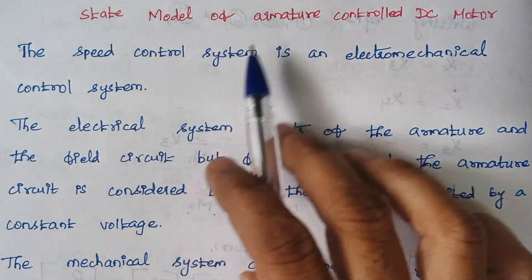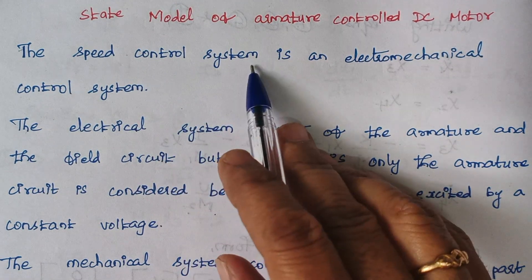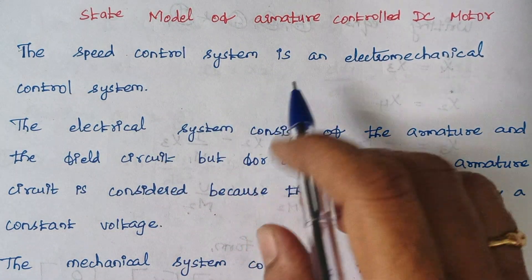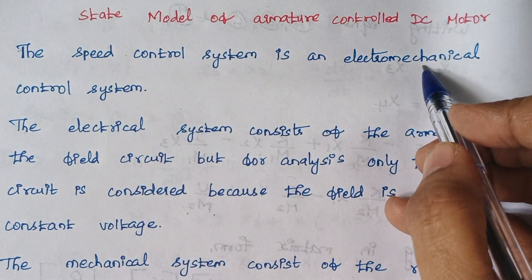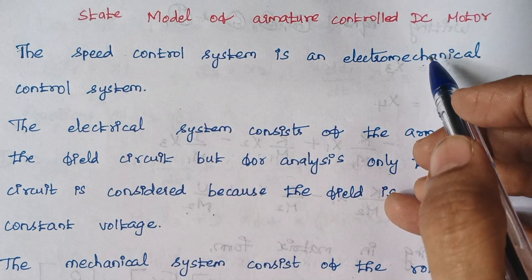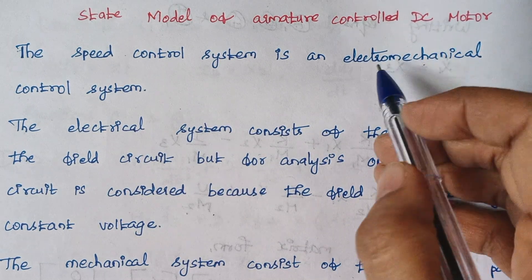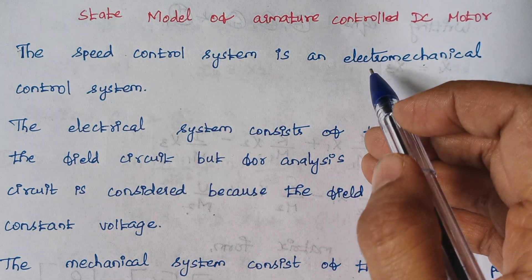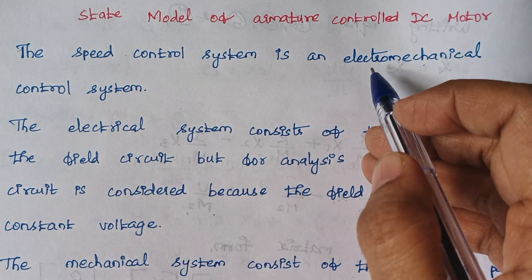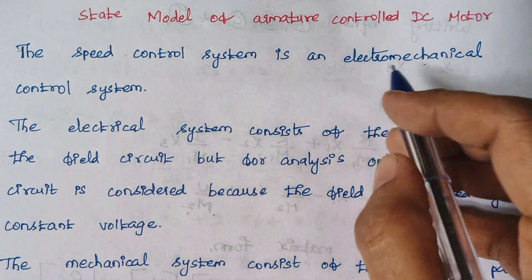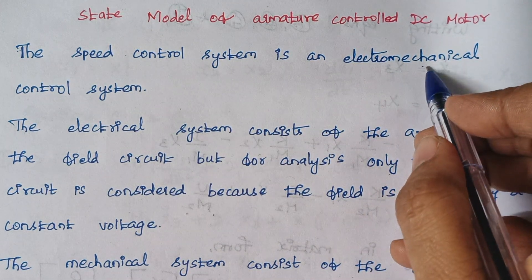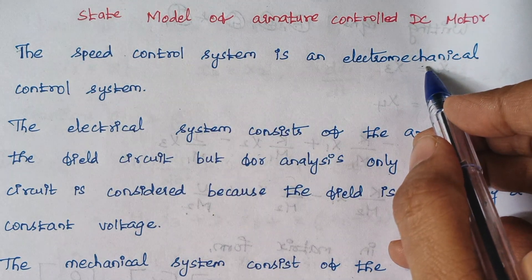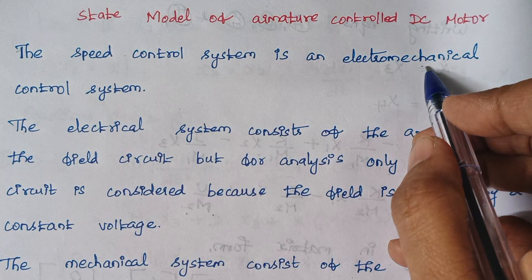The speed control system is an electromechanical system. Electromechanical means it includes both mechanical components and electrical components. Electrical components are the basic elements: resistor, inductor, and capacitor. Regarding mechanical components, they may be moment of inertia and dashpot.